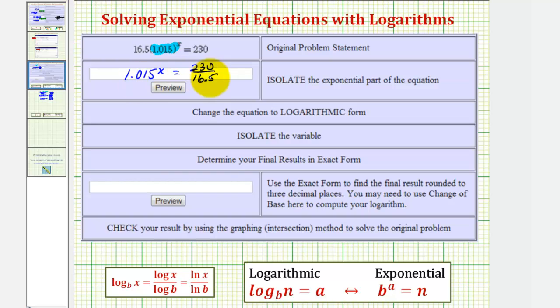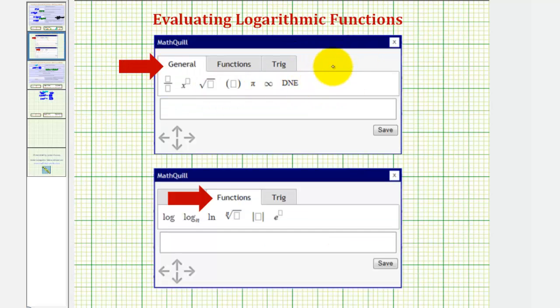We can enter this two ways. From the keyboard we can enter 1.015, shift six for this caret, which is the exponent key, and then x equals the quotient 230 divided by 16.5. Or we can click in the answer cell, click on the small yellow arrow that will appear, which brings up this math palette, and we can use this exponent option and this fraction bar here to enter the equation and then click save.